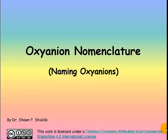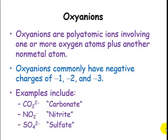Oxyanion nomenclature — basically, naming oxyanions. So what are oxyanions? These are polyatomic ions that have one or more oxygen atoms, at least one oxygen atom, plus another nonmetal atom in that polyatomic. These ions usually have charges of negative 1, negative 2, and negative 3.